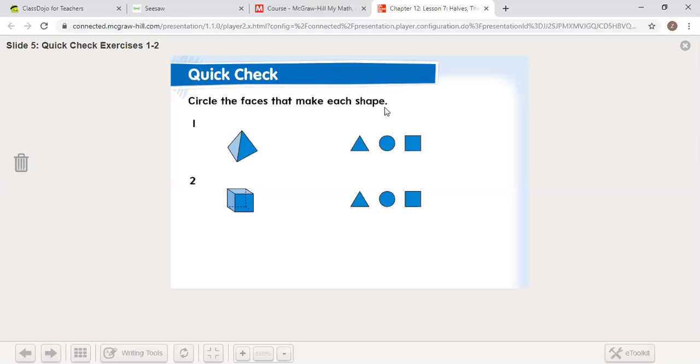Circle the faces that make each shape. Talk about the faces that would make a pyramid and what faces would make a cube. Go ahead and pause the video for a minute and discuss that. To make the pyramid, your side faces are triangles and your base, which you cannot see, is a square. A cube needs six squares.